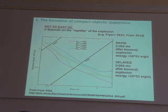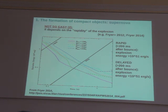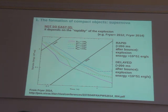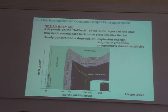We also don't know well how fast the shock is revived. This plot shows the dependence of the explosion energy of the supernova as a function of time for different models. If the shock is revived very early, the available energy is larger than if the shock is launched with a delay. This is very important when we include these models into models of black hole and neutron star formation.